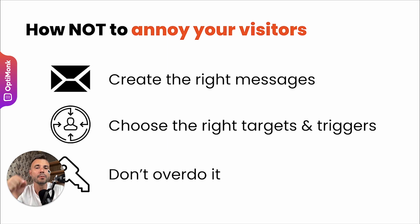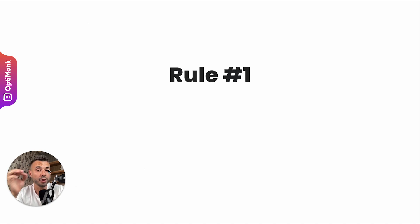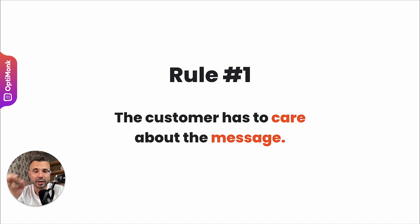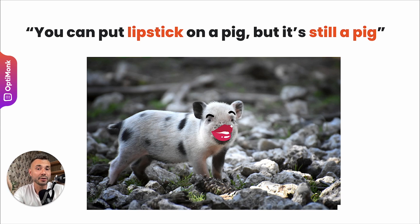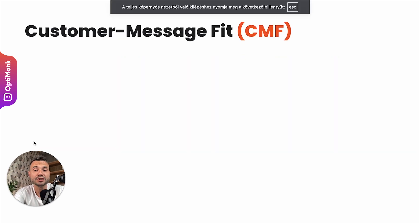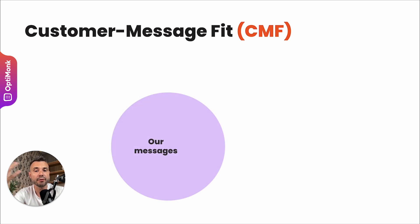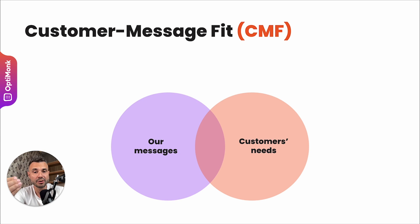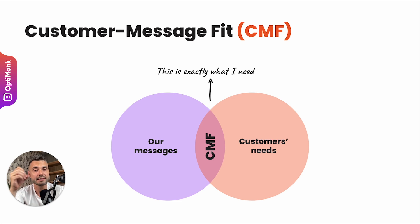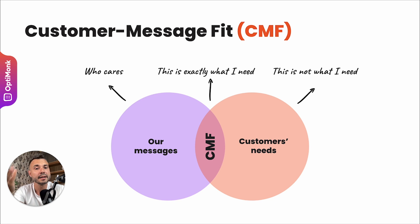Now let's look at the rules for using pop-ups the right way without annoying your visitors. The first and most important is to have the right message. The number one rule is that the customer has to care about the message — if they don't, it's like putting lipstick on a pig. Having the right message for the right people is what we call Customer Message Fit (CMF). When our messages overlap with the customer's needs, that's when the customer feels this offer is exactly what they need. Without CMF, customers will just ignore your message, leave your site without buying, and feel that this is not what they need.